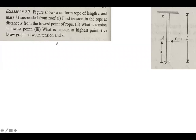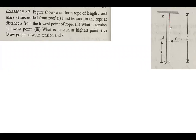Now, the same concept applies here. We have a rope that has mass throughout it, so every point on this rope will have a separate tension. If the rope were massless, tension would be the same throughout, but because the rope has mass, every point has a different tension. The figure shows a uniform rope of length L and total mass M.